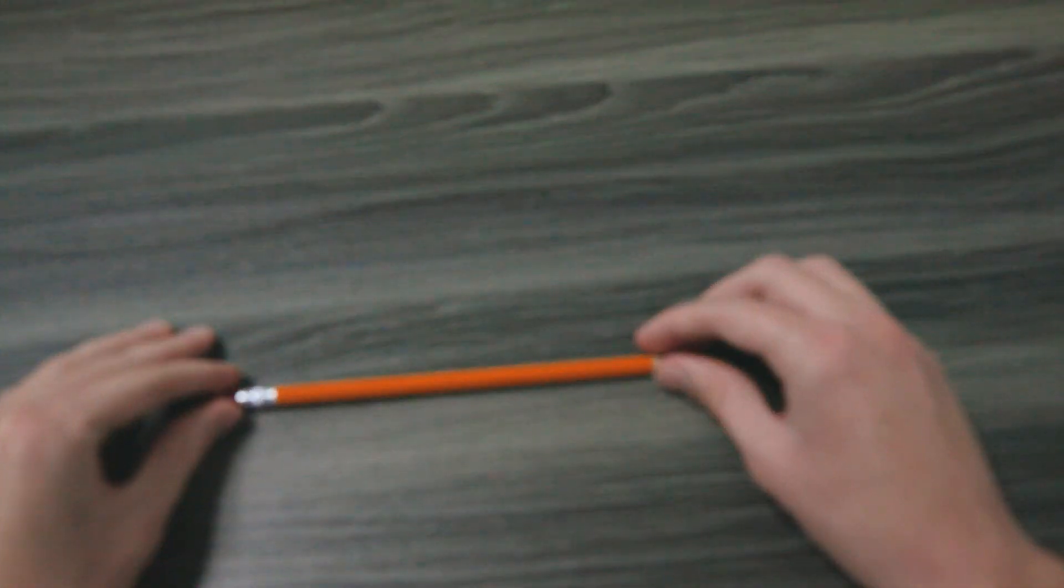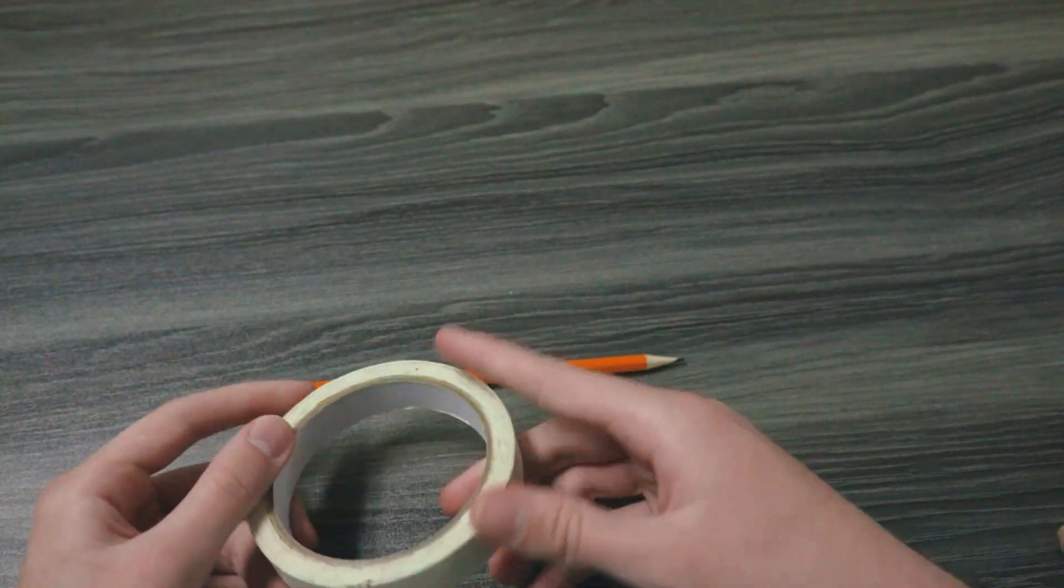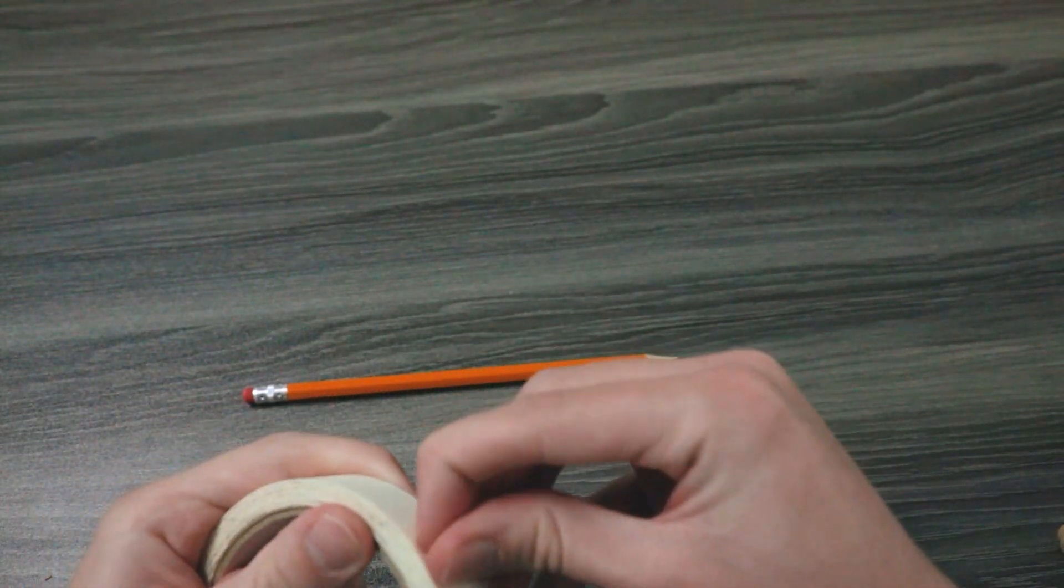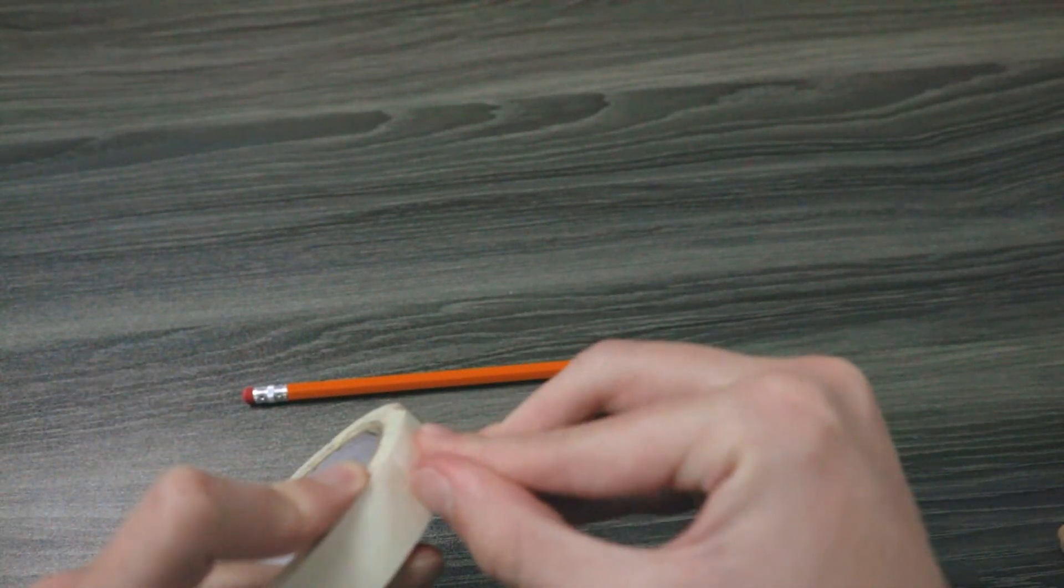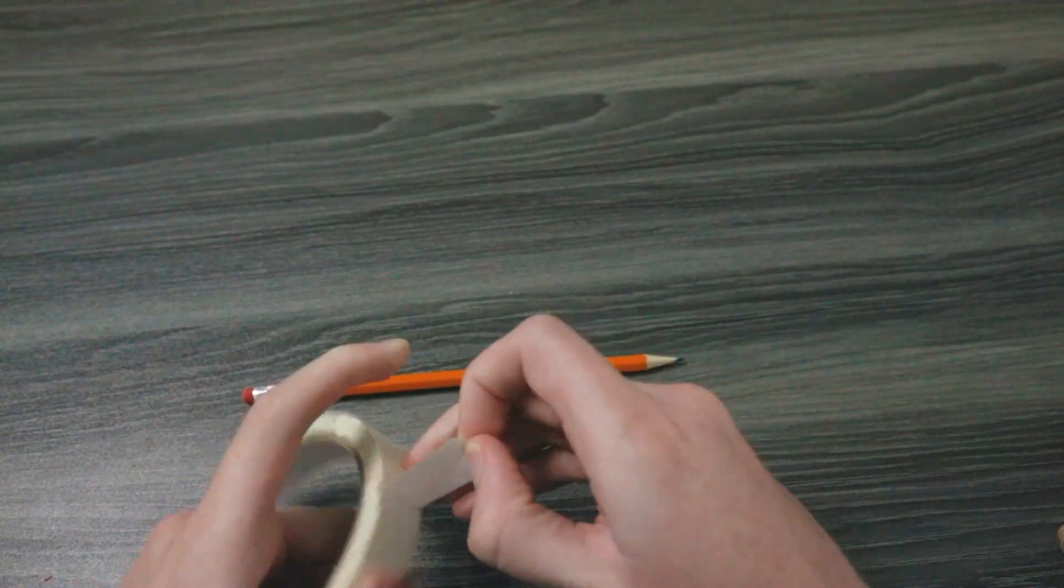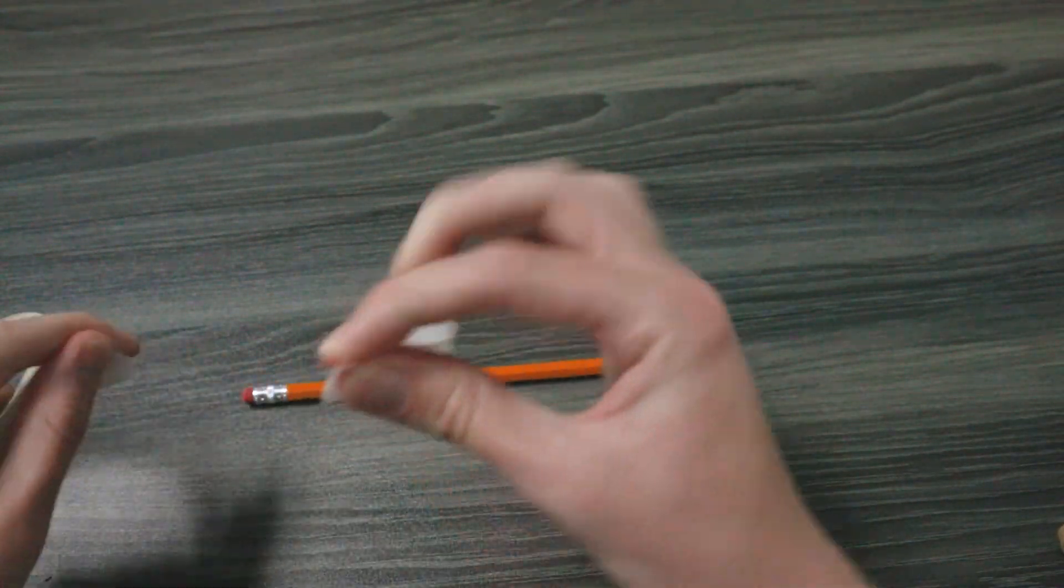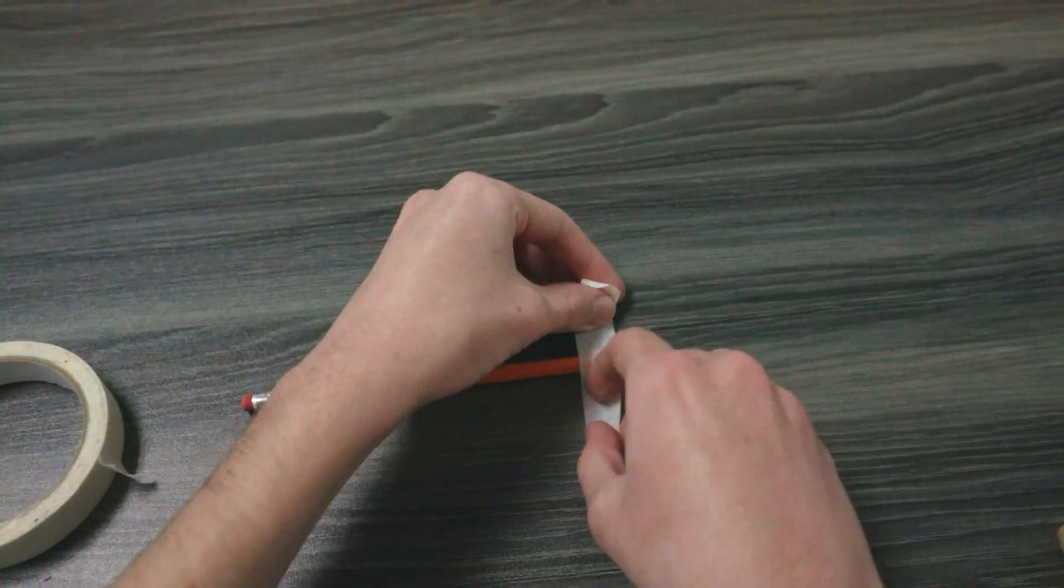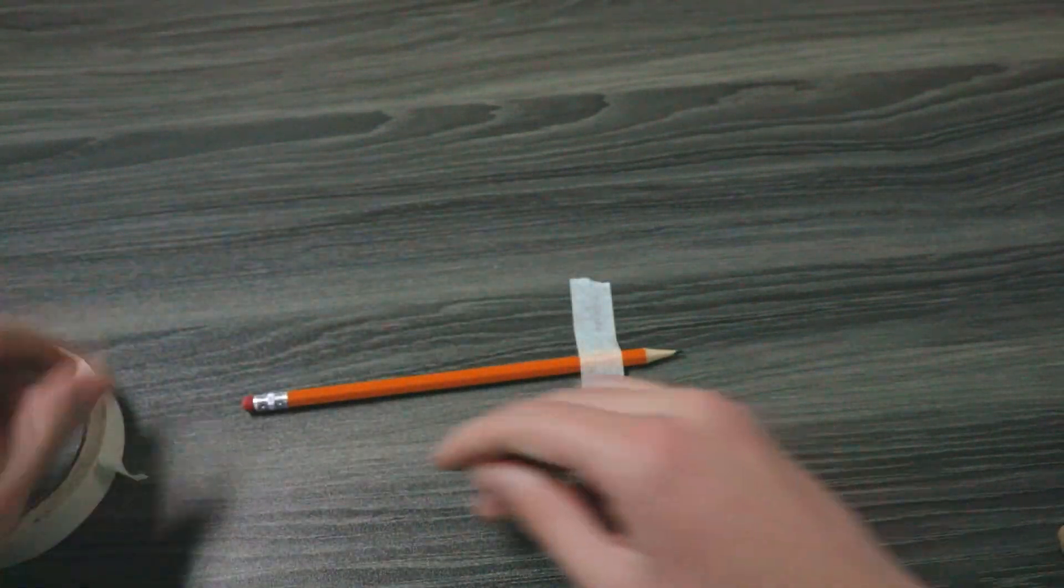What we're going to do is we're going to take a pencil and lay it on a flat surface like the table, and we're simply going to take some strips of tape and secure the pencil to the table. Make sure that the tip of the pencil as well as the eraser side of the pencil are open as we can use those to launch.